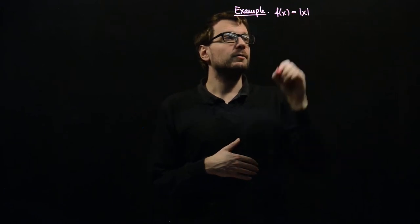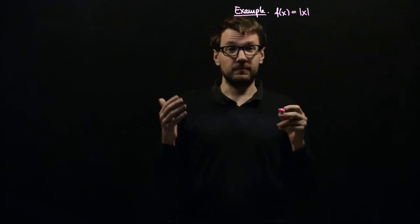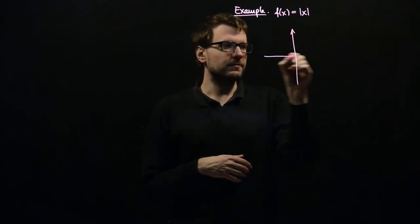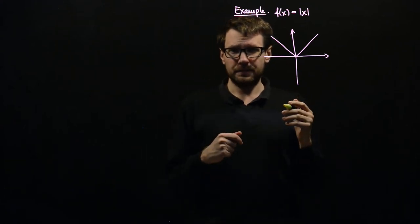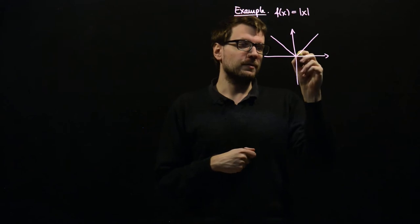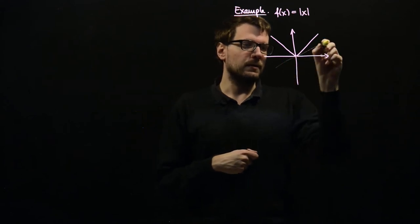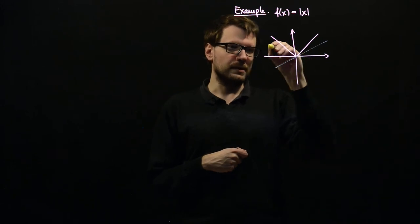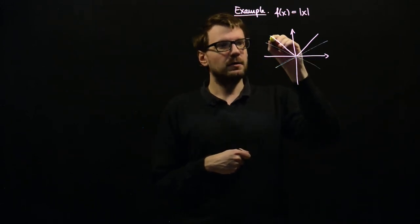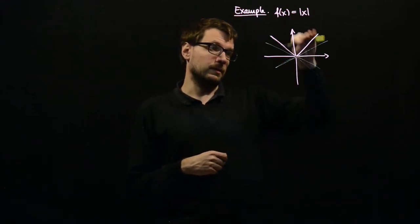First we will cover an example for which we can actually draw a picture, which makes things easier. If we set f(x) equal to the absolute value of x, so f is a function from ℝ to ℝ, we can draw a picture. We can get an intuition for the conjugate function by looking at those affine minorants with a fixed slope that touch the function at some point, or which are closest to the graph of the function without going over it.